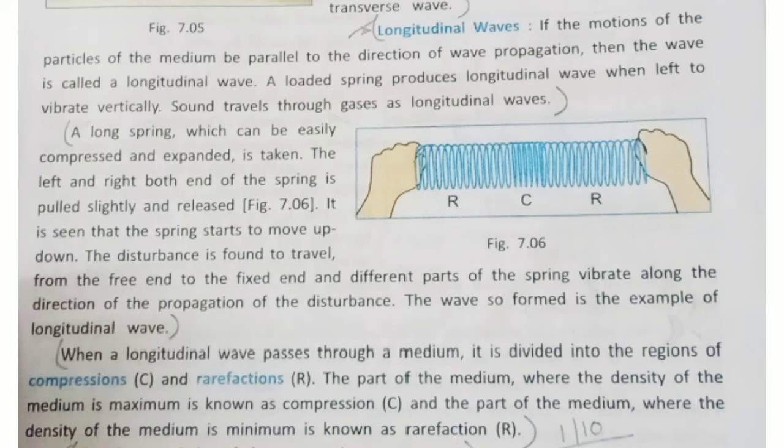When a longitudinal wave passes through a medium, it is divided into regions of compressions (represented as C) and rarefactions (represented as R). The part of the medium where the density is maximum is known as compression — the particles are very closely packed. The part where the density is minimum is known as rarefaction — the particles are loosely packed.